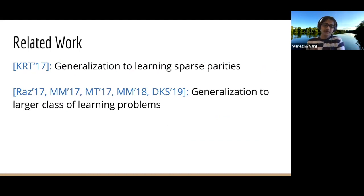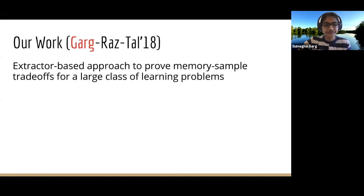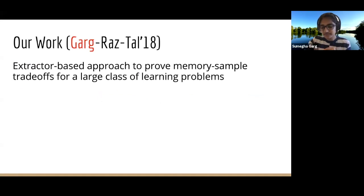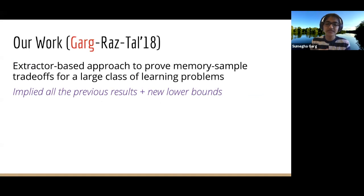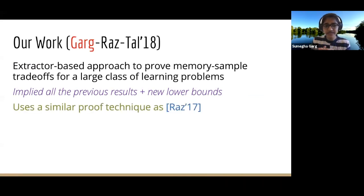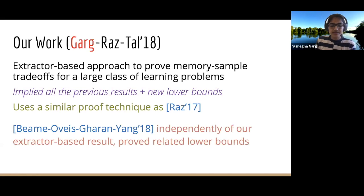There has been subsequent work generalizing these memory-sample trade-offs — for example, to learning sparse parities and to a large class of learning problems. In 2018, in joint work with Ran and Avishai, we developed an extractor-based approach to proving such memory-sample trade-offs for a large class of learning problems. This implied all previous results plus new lower bounds, for example for learning polynomials over F_2. Independently, there was another paper proving related lower bounds for learning polynomials.